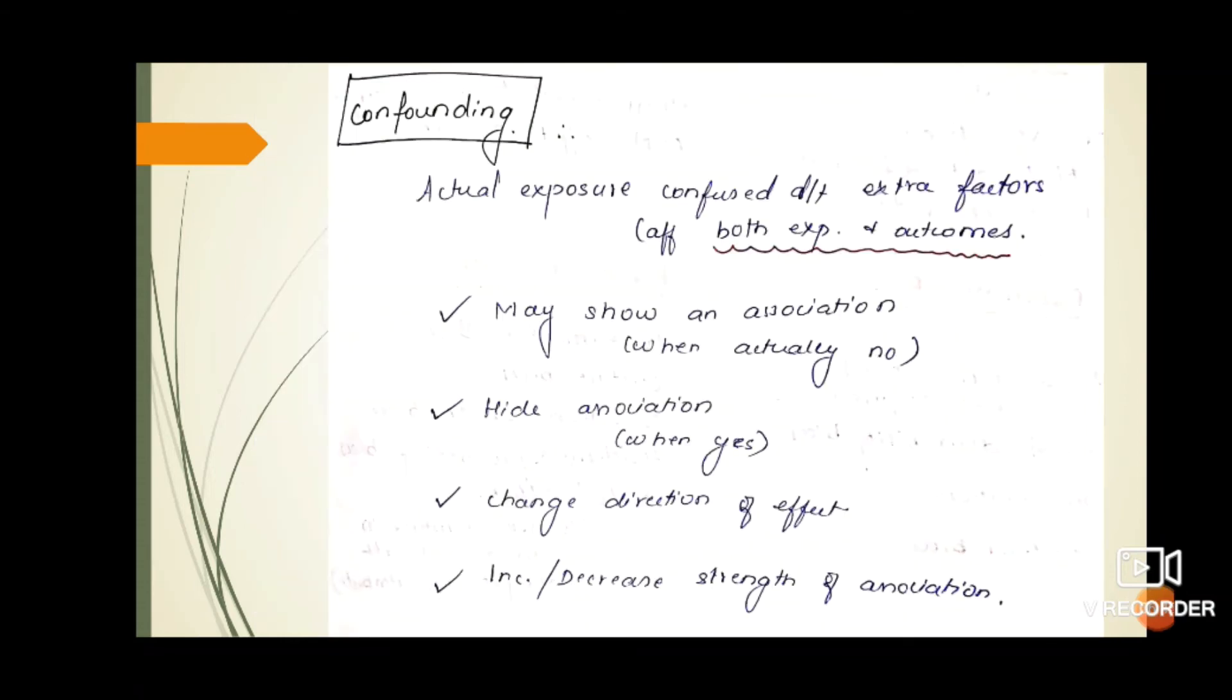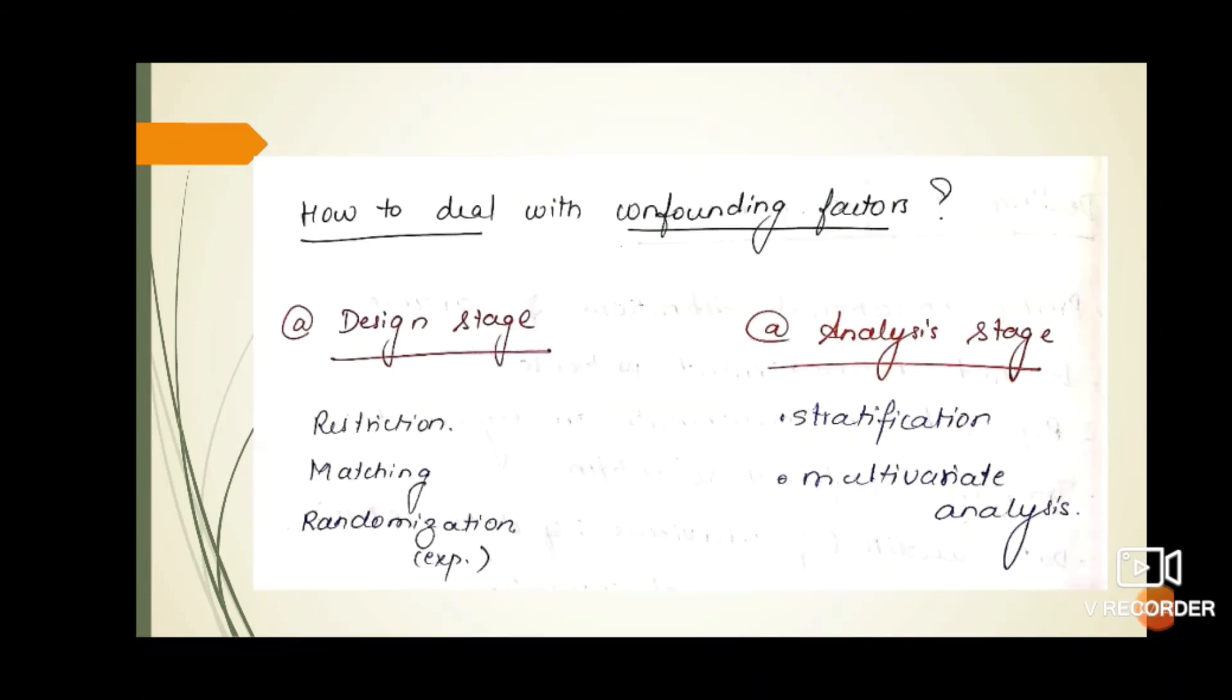Coming to confounding factors, these are factors that cause effect to the result by affecting both exposure and outcome. The actual exposure will be confused with these extra factors, making our result invalid. It may show an association when it doesn't exist, hide existing associations, change the direction of effect, or increase or decrease the strength of association.